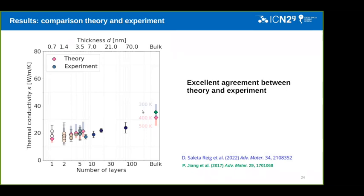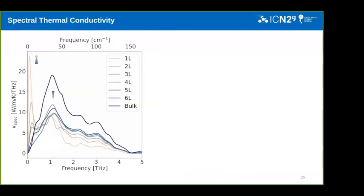So now the idea is to understand why we observe this flat trend. As a starting point, we decided to study the spectral thermal conductivity, which means that basically the thermal conductivity is an integral in frequency. So we can decompose the thermal conductivity as a function of the frequency. And basically, here we are plotting the values of the integrand. The area under this line represents the total thermal conductivity that I put in the previous slide.